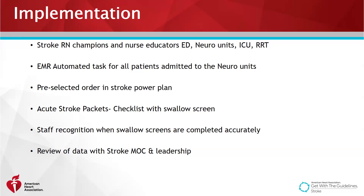In order to get buy-in from key stakeholders, we shared our performance measures that were lacking compared to other facilities. These performance measures were shared with our leadership and our stroke model of care team. An acute stroke packet was also created for nurses to use when an acute stroke patient arrived to our facility. This packet included a checklist with the swallow screen as one of the tests to be performed. To improve compliance, we have a recognition program where you can fill out a recognition form sent to the employee and their manager. These forms have point values you can exchange for gifts, they can be included in annual performance reviews, or nurses may use them in their portfolios.